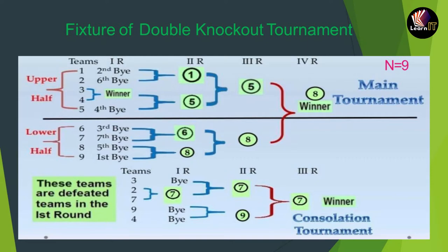At the time of distribution, the first bye is given to the last team in the lower half, the second bye to the first team in the upper half, the third bye to the 6th team in the lower half, the fourth bye to the 5th team in the upper half, the fifth bye to the 8th team in the lower half, the sixth bye to the 2nd team in the upper half, and the seventh bye to the 7th team in the lower half. So a total of 7 byes are given in the first round. Only teams 3 and 4 will play, and the winner goes to the second round.